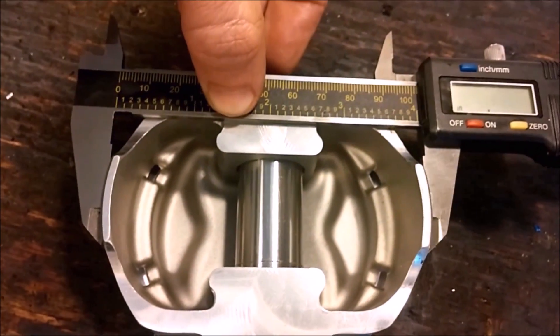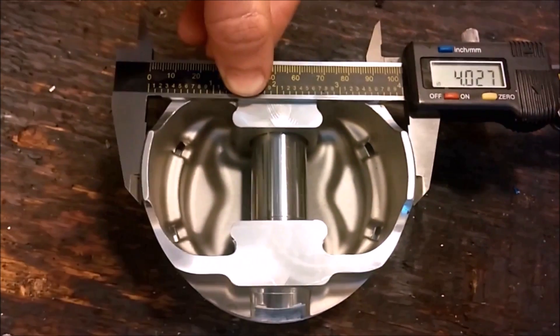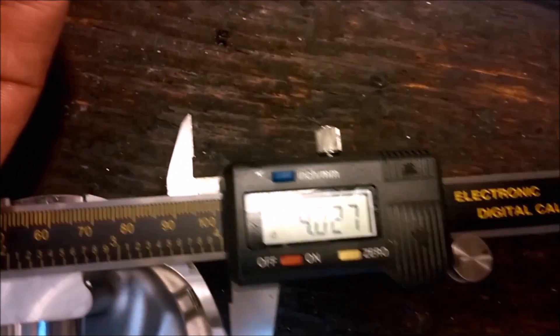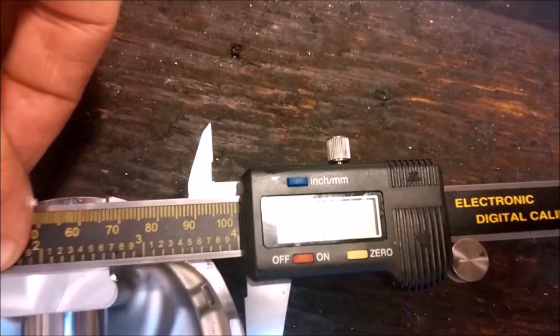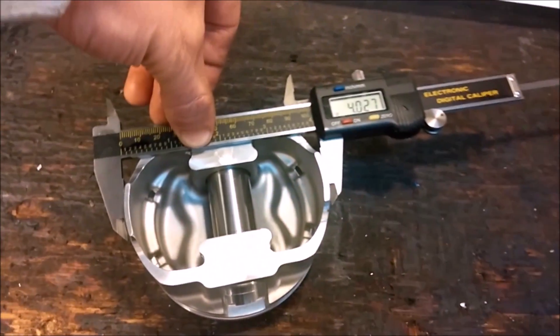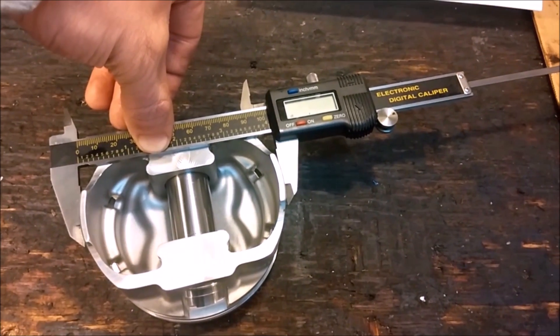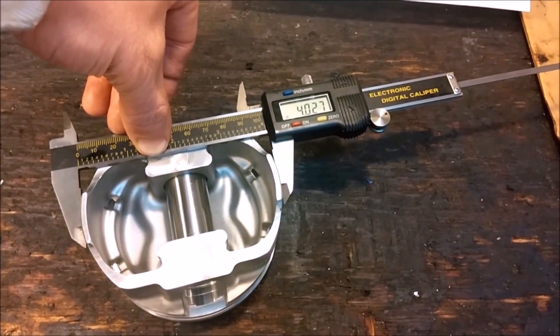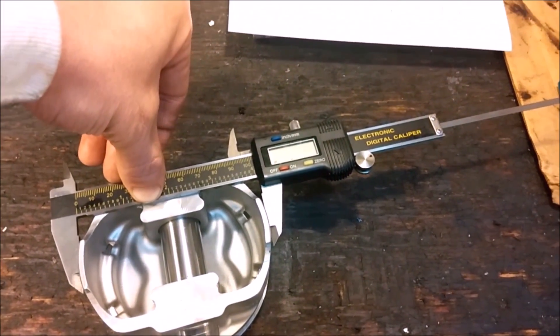Okay, and you can see that I've got it square across perpendicular to the wrist pin, sitting flush, and we're measuring at 4027, looks like right at 4027. So we'll jot that down for all the pistons and see if there's any large pistons or small pistons that we want to match to the bores.